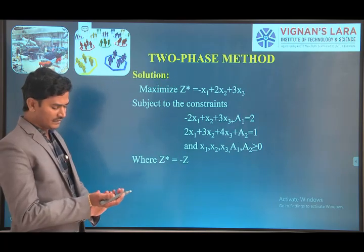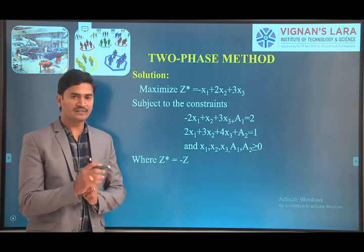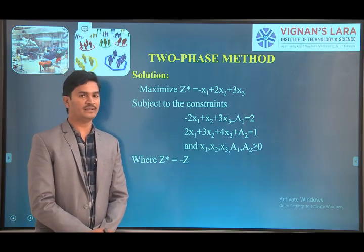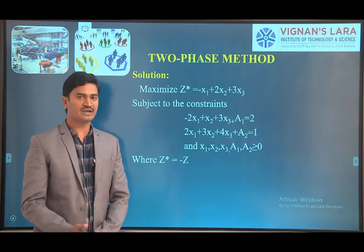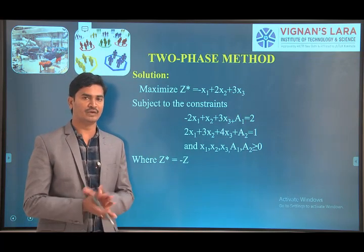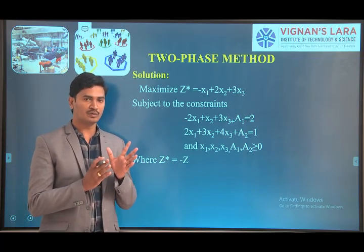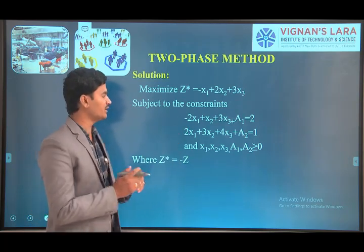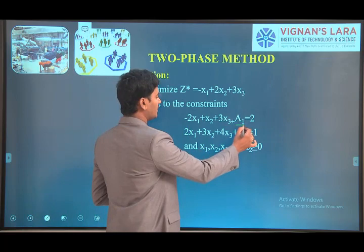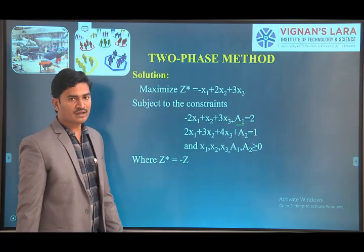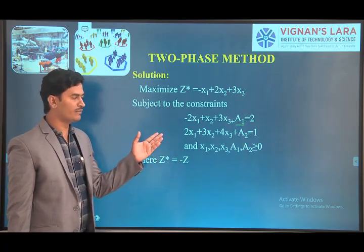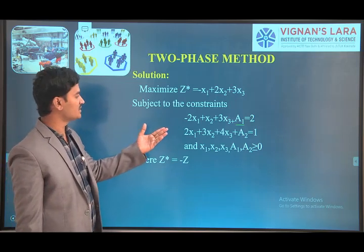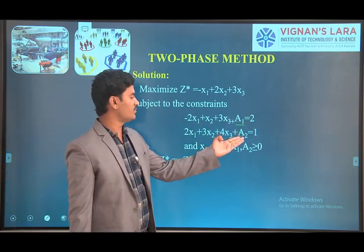If the constraint is a less-than-or-equal-to type, we simply take the slack variables. If the constraint is a greater-than-or-equal-to type, we take the surplus variables and artificial variables. In our case here, we have only two constraints of equality type, so we have to take the artificial variables. While balancing the constraint for the two-phase or simplex method, we just take the artificial variables.